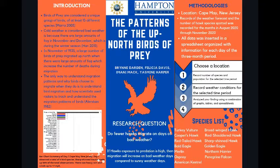In November of 1935, a large number of birds of prey migrated up north when there were large amounts of fog, which increased the number of deaths during the migration.